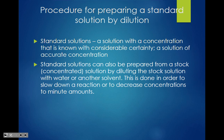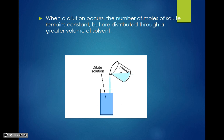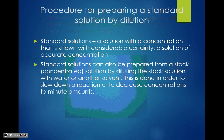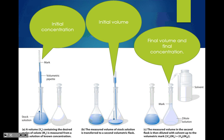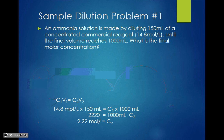A standard solution is a solution whose concentration I know. It can also be prepared from a stock solution by dilution. When a dilution occurs, the number of moles of solute remains constant because you're not adding more solute — just more water. The procedure: take your initial solution, use a pipette to draw out a certain amount, place it into a specific volumetric flask, then add water to the mark. You need a pipette and a volumetric flask to make a dilution.